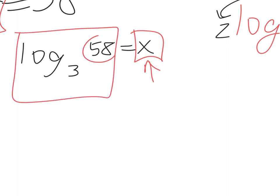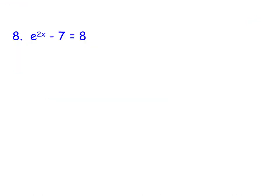Now, if this happened to be like a 9 or a 27, then you should simplify this. But you can't make the bases the same, so you're stuck — you just leave it like that. x is alone, so it's log base 3 of 58.